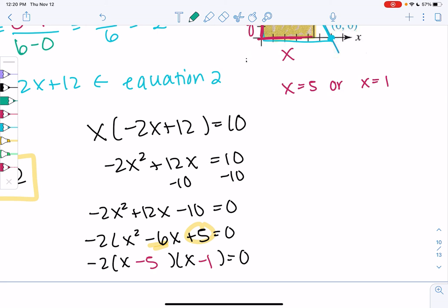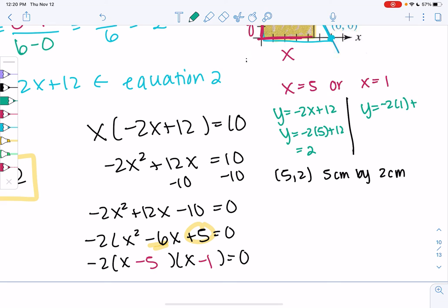So if x equals 5, y is negative 2x plus 12. So y is negative 2 times 5 plus 12 or 2. So 5 and 2 would be a solution. So 5 centimeters by 2 centimeters. Or let's see if the 1 makes sense as well. So if x is 1, then y is negative 2 times 1 plus 12 or 10.